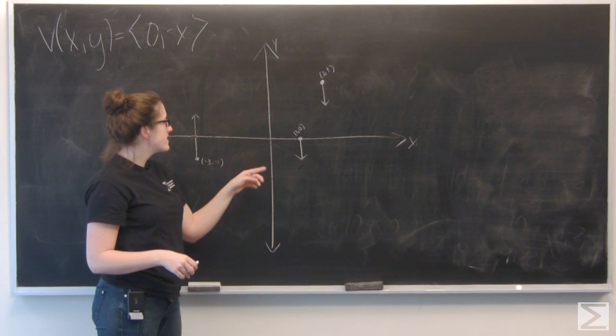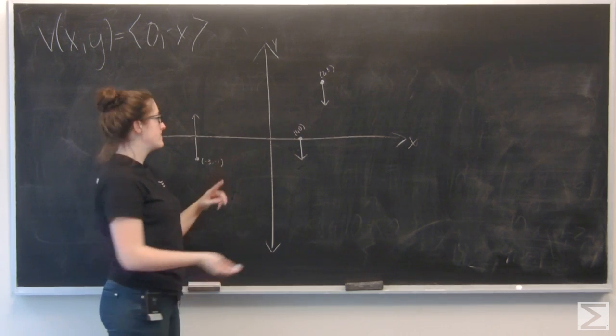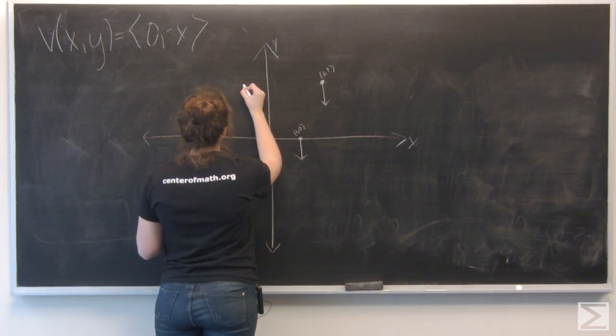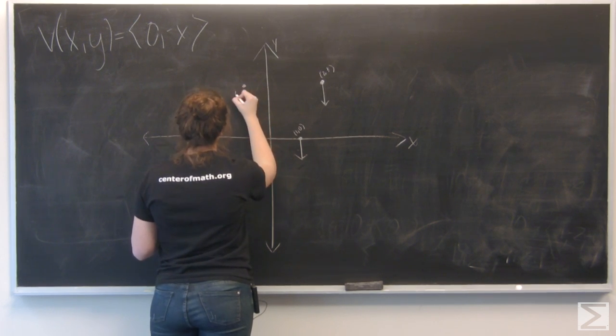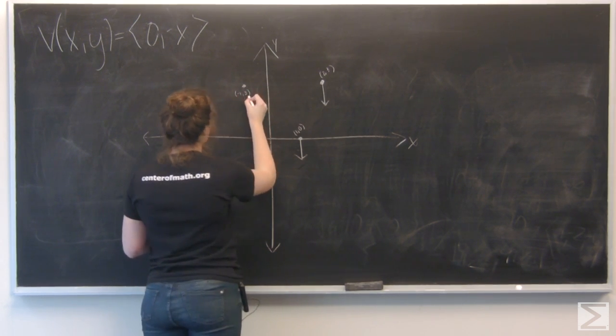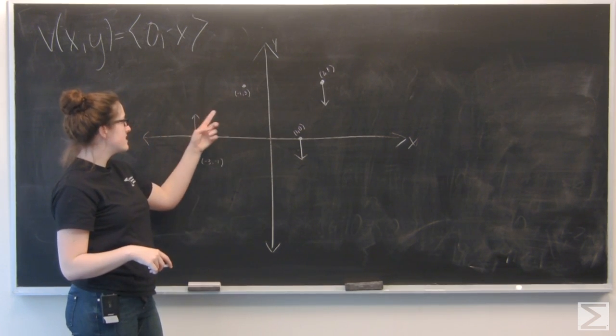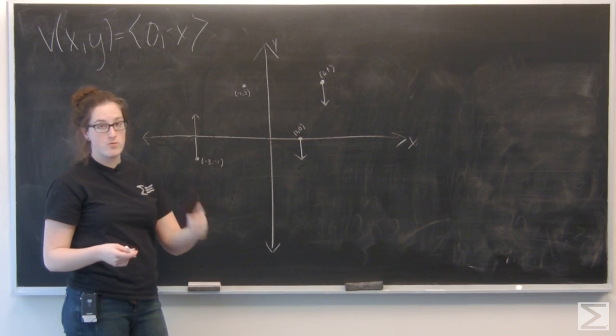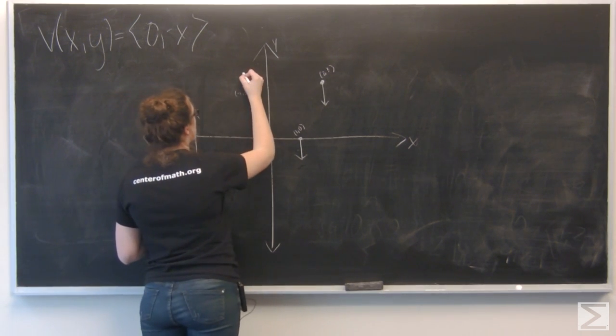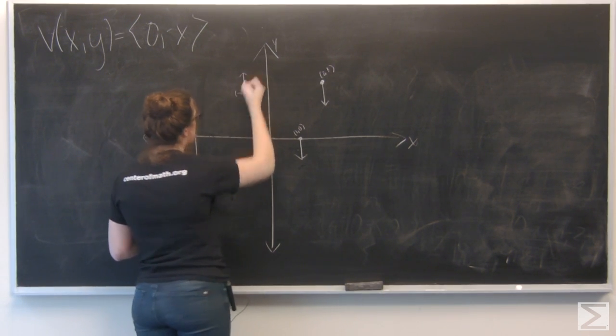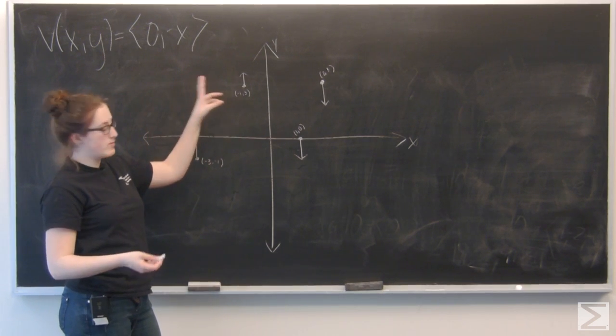Let's do the same thing for negative 1, 3. Again, no i component, j component is going to be the opposite of x, so positive 1. So a little 1 unit vector pointing up.